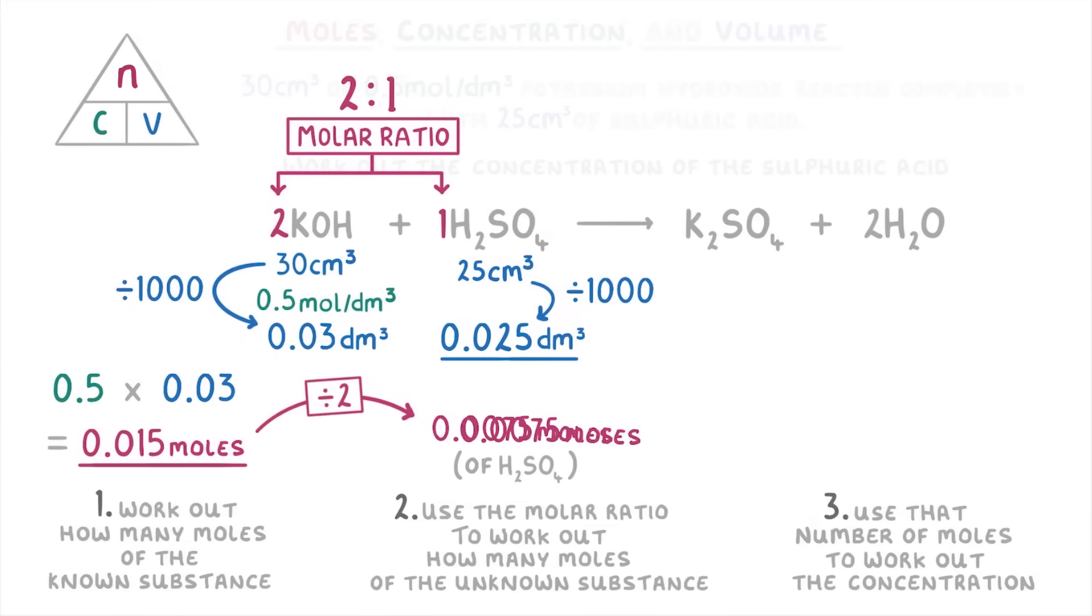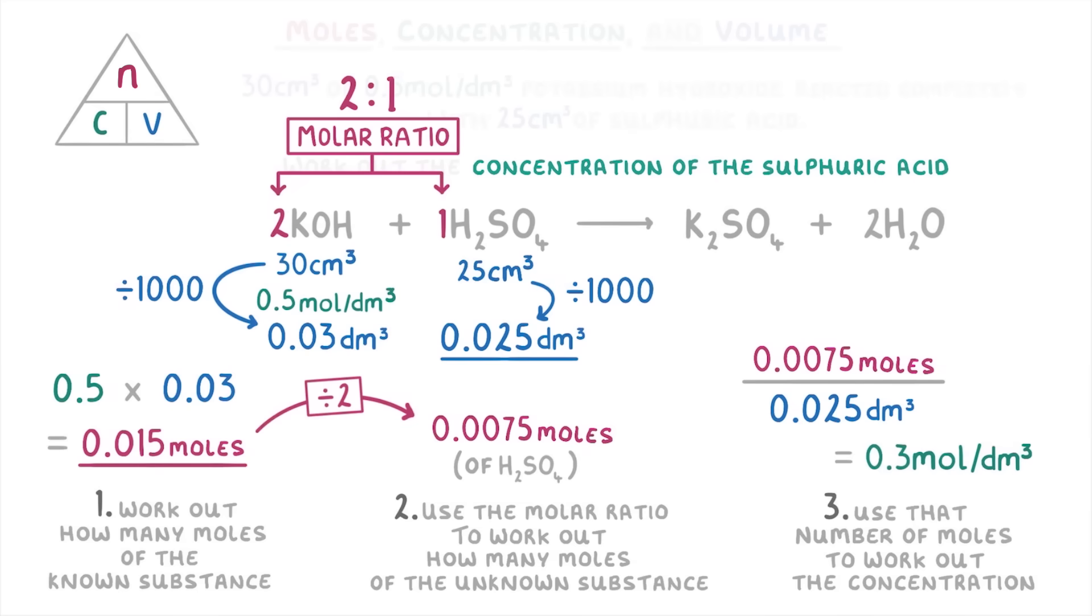So we take our 0.0075 moles of sulfuric acid and divide it by the volume of 0.025, which tells us that the concentration of sulfuric acid is 0.3 moles per decimetre cubed. And that is our final answer to the question.